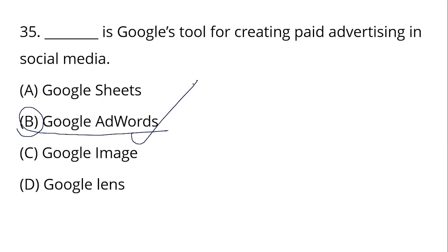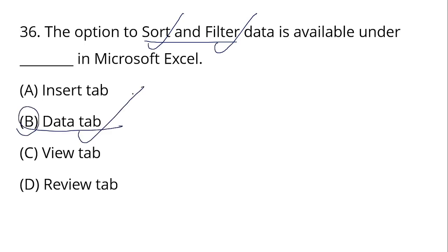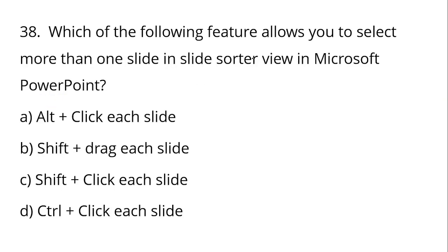The option to sort and filter data is available under the Data tab in Microsoft Excel. Sort and Filter allows you to show and hide data, or sort in ascending or descending order. The full form of MAN in networking is Metropolitan Area Network.